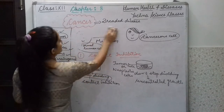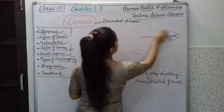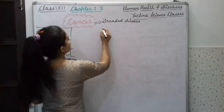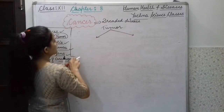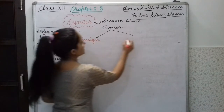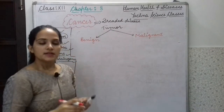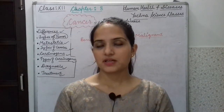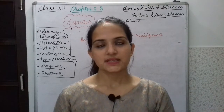Now we will discuss the types of tumor. Are all tumors harmful or not? Tumors are basically of two types: the first is benign tumor and the second is malignant tumor. A benign tumor is one that is confined to its original location — it remains at its original location.